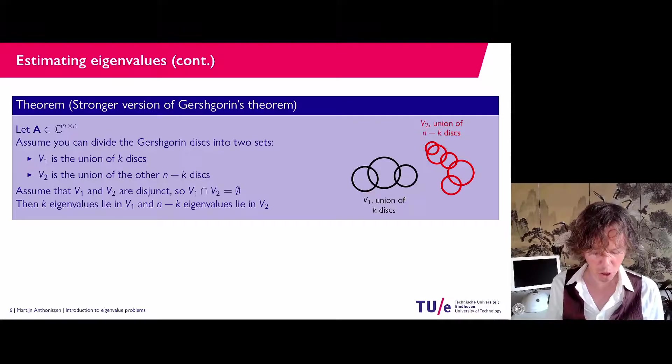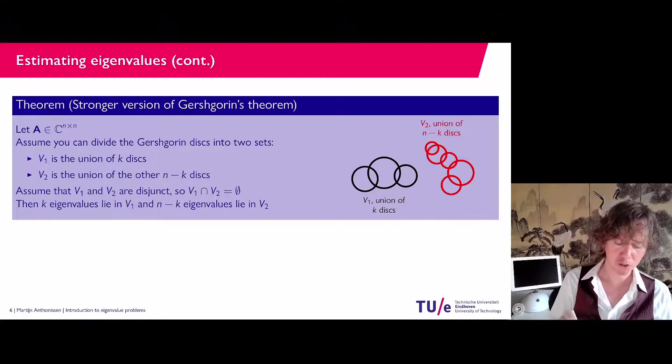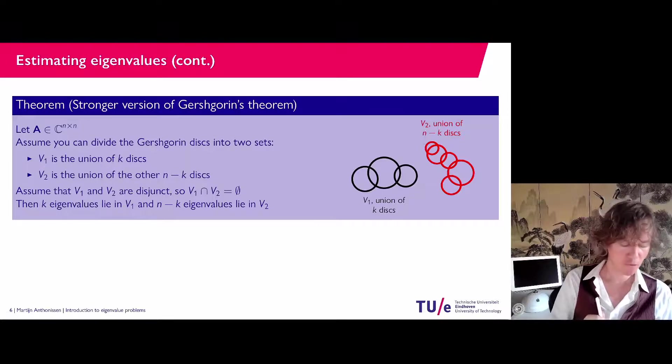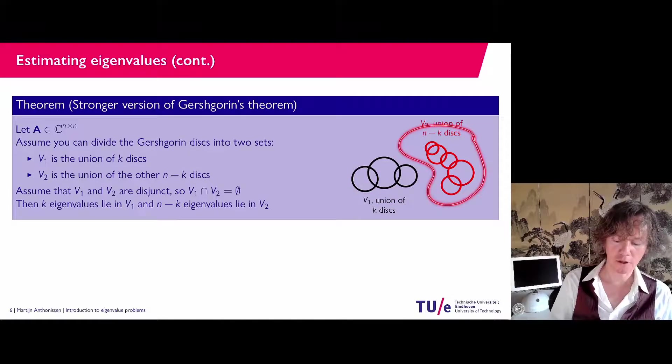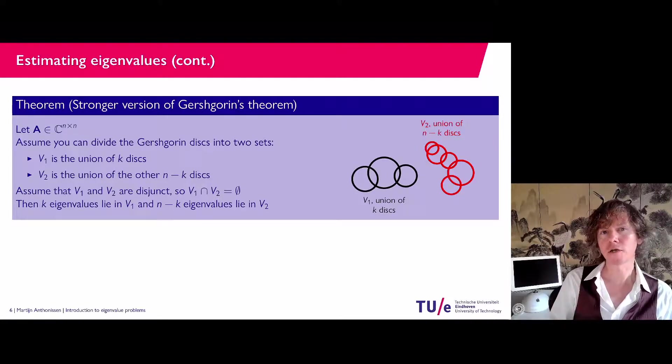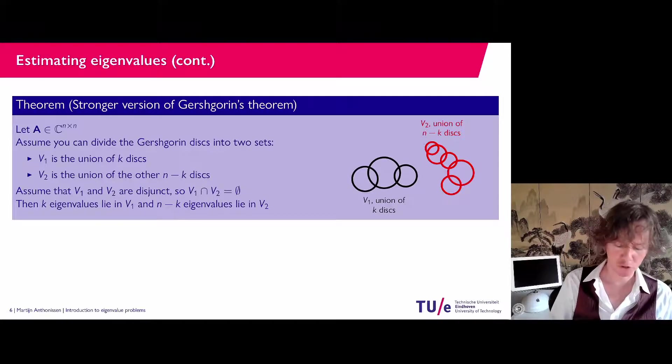Then what you do know, if they do not overlap, these two sets, the black and the red disks, is that K of the eigenvalues lie in the union of these disks. And n minus K of the eigenvalues lie here. So it is still not saying that every disk has an eigenvalue. But it is a bit sharper than what we had on the previous slide.